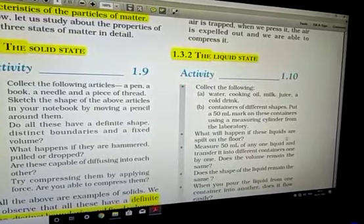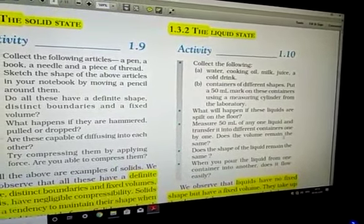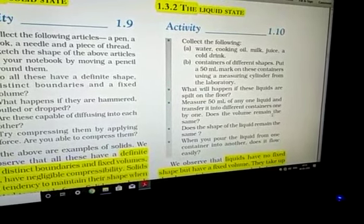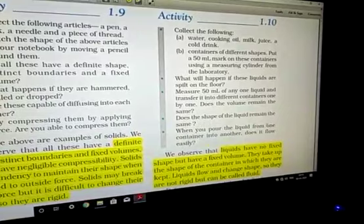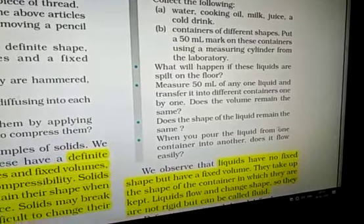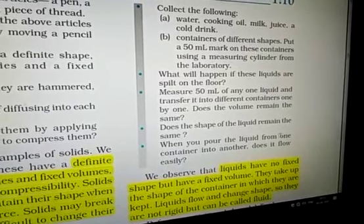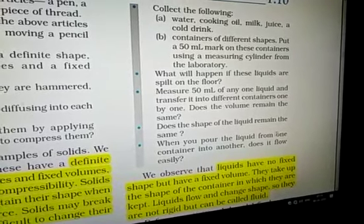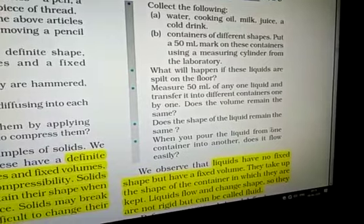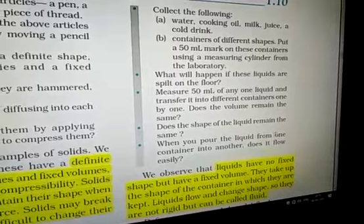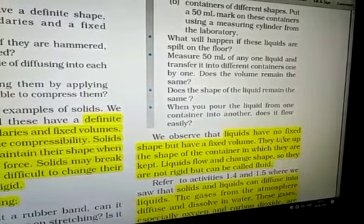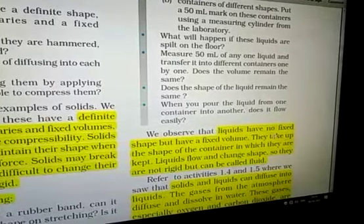Now, the liquid state. Activity 1.10: Collect some articles - water, cooking oil, milk, juice, and cold drink, for example. Use containers of different shapes with 50 ml volume. When you put these substances in different containers, you will see they take the shape of the given containers, meaning they have no fixed shape. But when you measure their volume, it remains 50 ml even in any container, so they have fixed volume. Liquids have no fixed shape but have fixed volume. They take up the shape of the container in which they are kept. Liquids flow and change shape, so they are not rigid but can be called fluids.